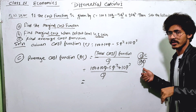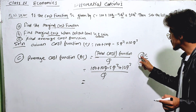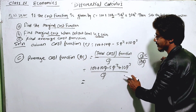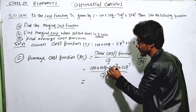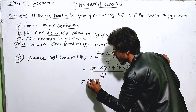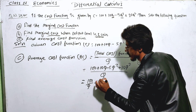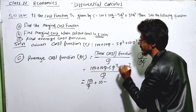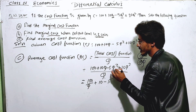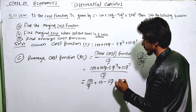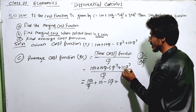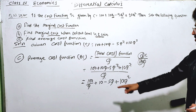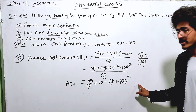Dividing each term by Q: 100 divided by Q gives 100/Q. The term 10Q divided by Q gives 10. The term minus 5Q squared divided by Q gives minus 5Q. The term 10Q cubed divided by Q gives 10Q squared. So the average cost function AC equals 100/Q plus 10 minus 5Q plus 10Q squared.